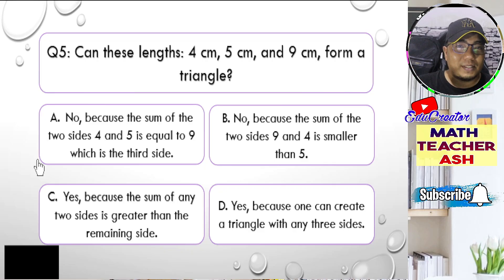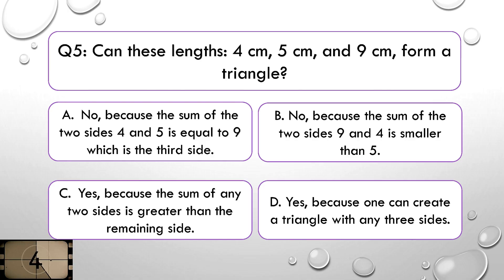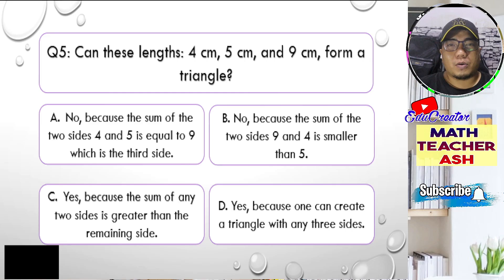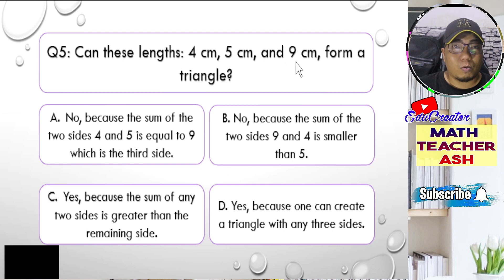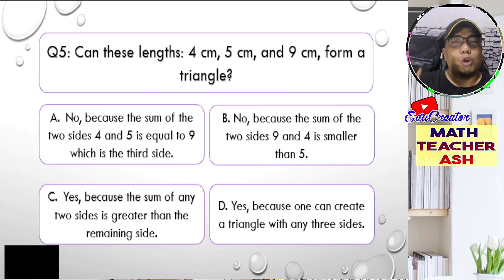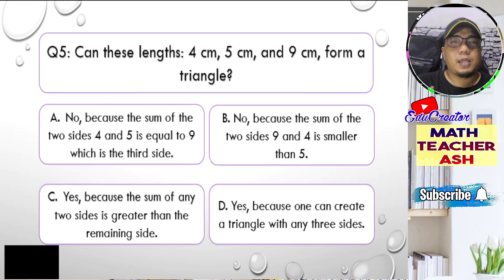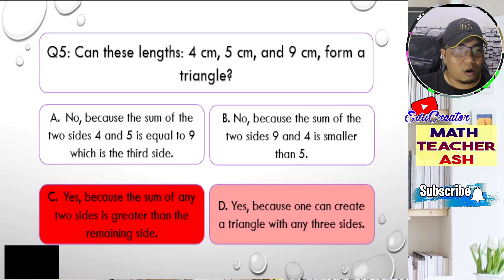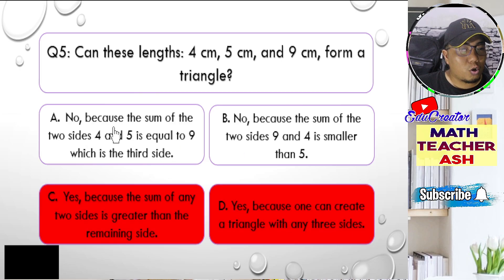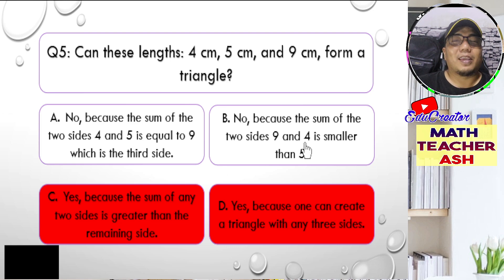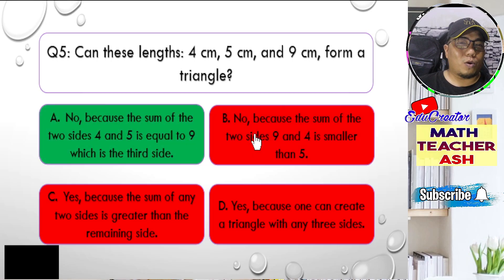For this question, 4 + 5 = 9, and 9 is equal to the third side. The sum of the two sides should always be greater than the third side, so choices C and D are already wrong. Letter B is also wrong. The correct answer is letter A — no, because the sum of the two sides 4 and 5 is equal to 9, which is the third side.